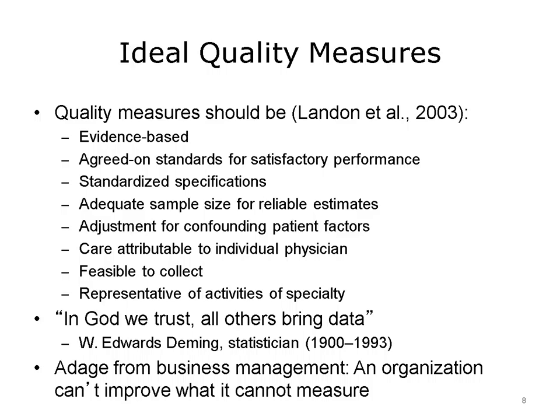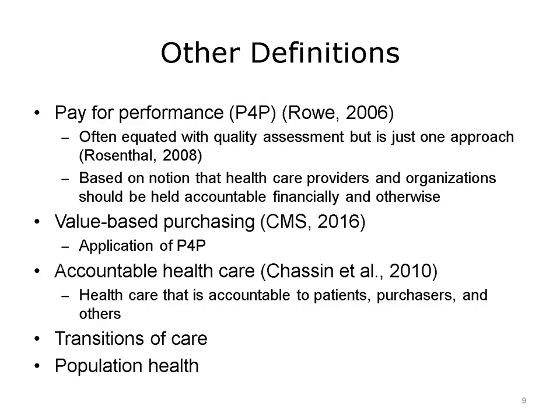Another point to remember about quality measures is that they have to consist of data. W. Edwards Deming, a famous statistician, said, 'In God we trust, all others bring data,' which means that all humans need to bring data to measure quality and act on it. Another adage from business management is that organizations cannot improve what they cannot measure. Another term discussed often in the context of quality is pay for performance, sometimes abbreviated as P for P. Pay for performance is just one approach to measuring and acting on health care quality — the notion is that health care providers and organizations should be held financially accountable for the quality of care.